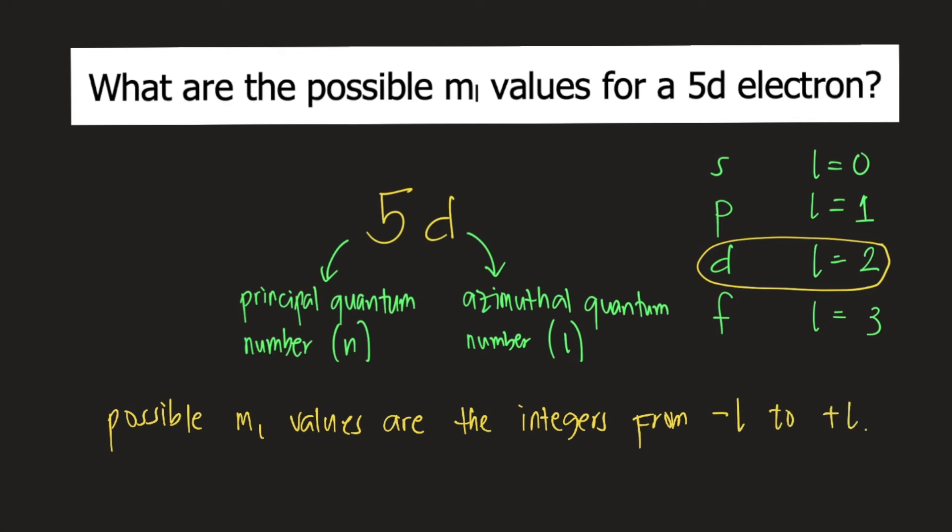So in our problem, for a 5D electron, we figured out that L is equal to 2. So the possible M sub L values are integers from negative 2 to positive 2.